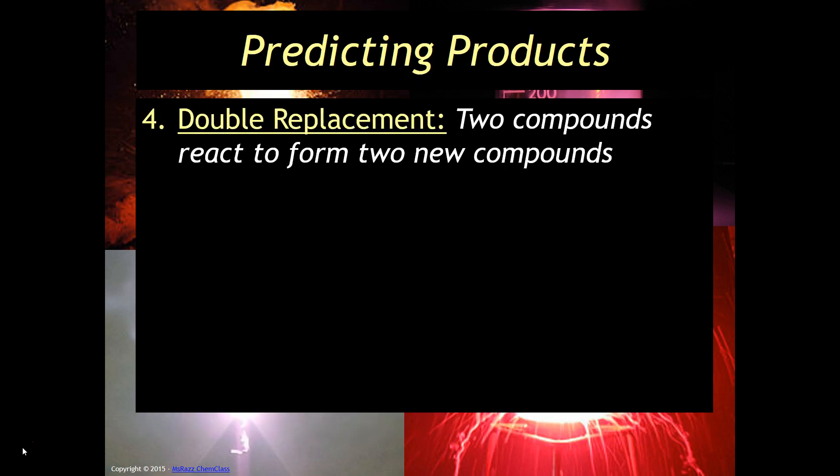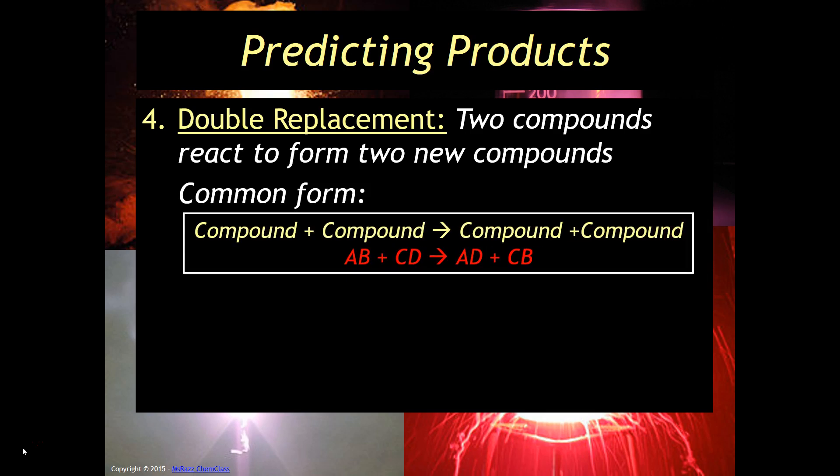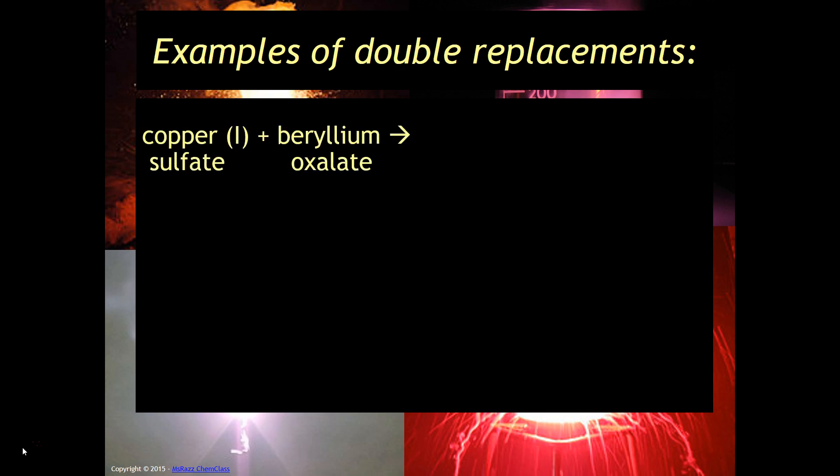So double replacement reactions can be recognized because you're going to have two compounds reacting together to give you two new compounds. For example, if you had copper 1 sulfate and beryllium oxalate, notice we have two compounds and so basically these are just going to flip-flop partners.